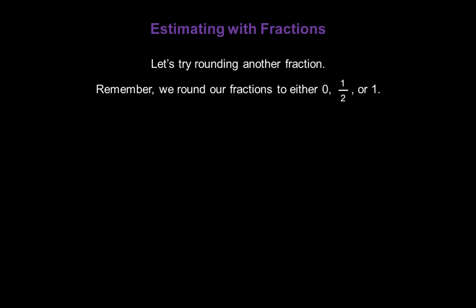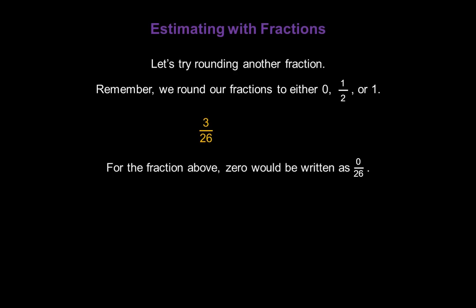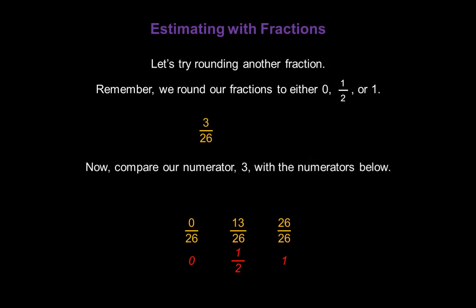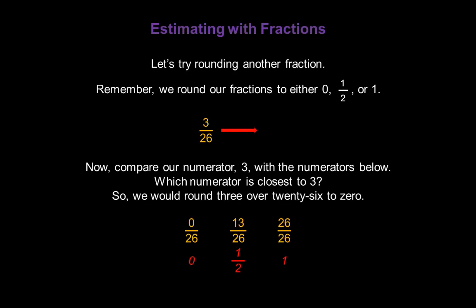Let's try rounding another fraction. Remember, we're going to round to either 0, 1 half, or 1. Take a look at 3 over 26. For that fraction, 0 would be written as 0 over 26, 1 half would be written as 13 over 26 (because 13 is half of 26), and 1 would be written as 26 over 26. Comparing the numerator 3 with those reference numerators, the closest is 0. So we would round 3 over 26 to 0.